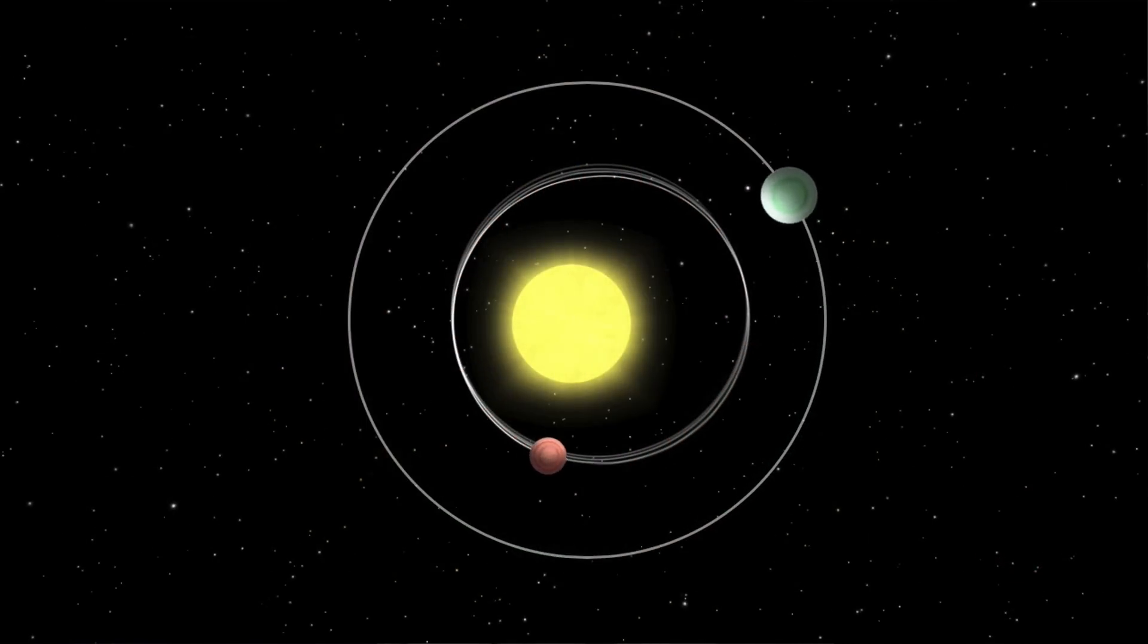So then the next time this planet comes around, it will come early or late. And so this is called the transit timing technique.